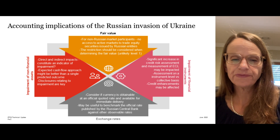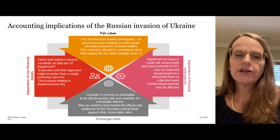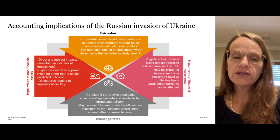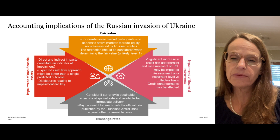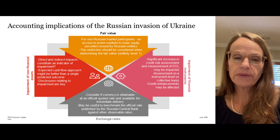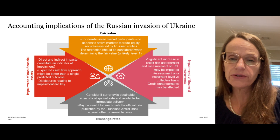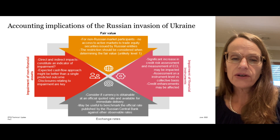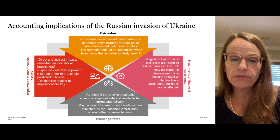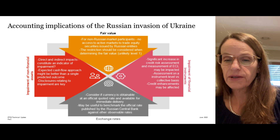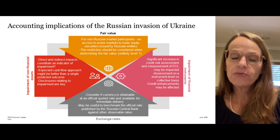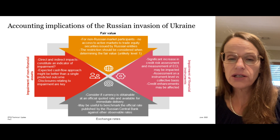Exchange rates are also an important consideration. IAS 21 requires the use of closing rates. In determining whether a rate is a closing rate, an entity should consider whether currency is obtainable at an official quoted rate and whether the quoted rate is available for immediate delivery. The Russian central bank is still publishing its official rate on a regular basis. However, based on restrictions, rubles are now no longer being exchanged into other currencies under normal conditions. Given it is becoming increasingly difficult to exchange rubles, and other official rates such as from the ECB or US Federal Reserve are no longer available, it is now useful to benchmark the official rate published by the Russian central bank against other observable rates, which would indicate the rate at which entities outside Russia may actually be exchanging rubles.